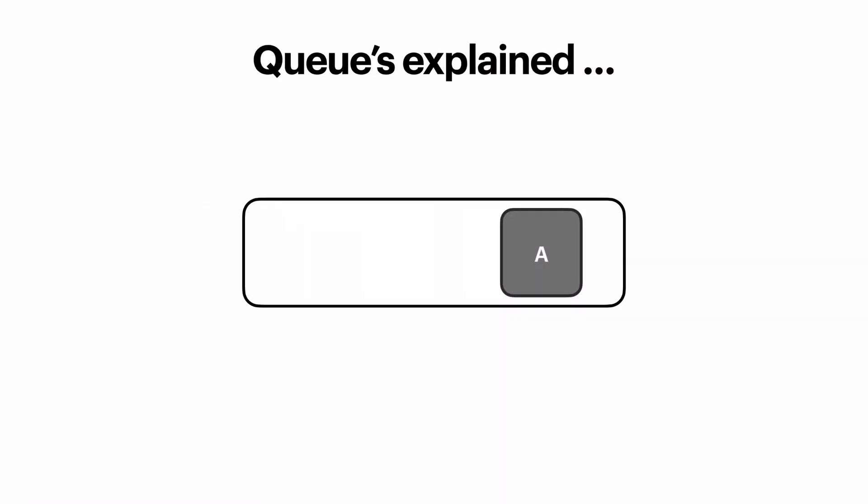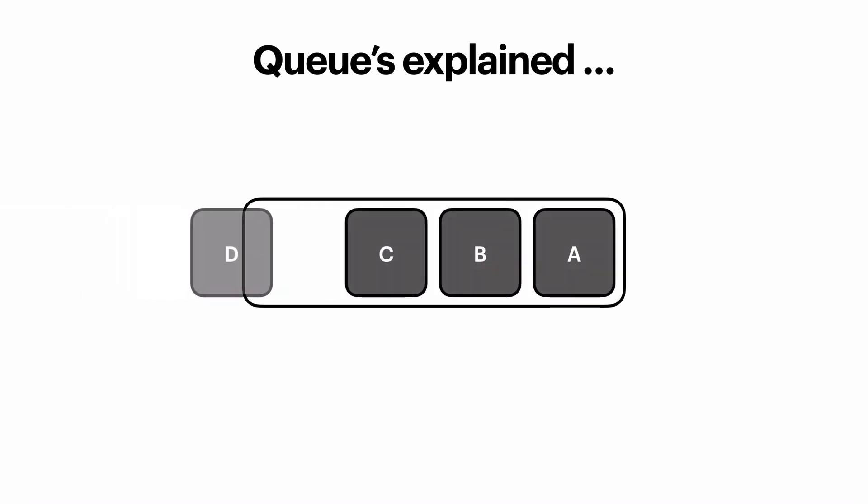So what is a queue? A queue is a first in first out data structure, so everything that is added to the queue, as we see here, will be popped from the queue in the order that it arrived.